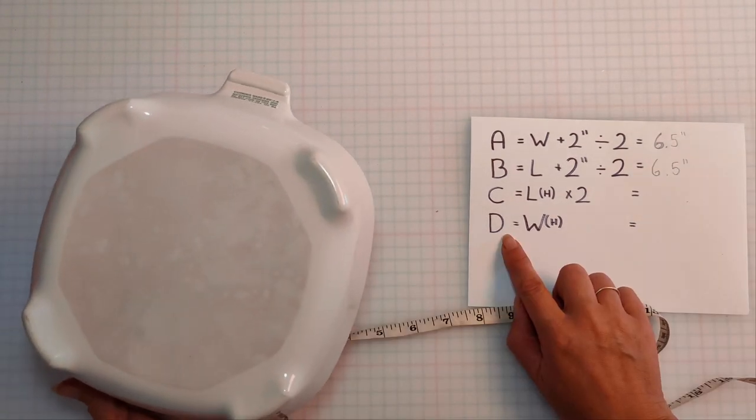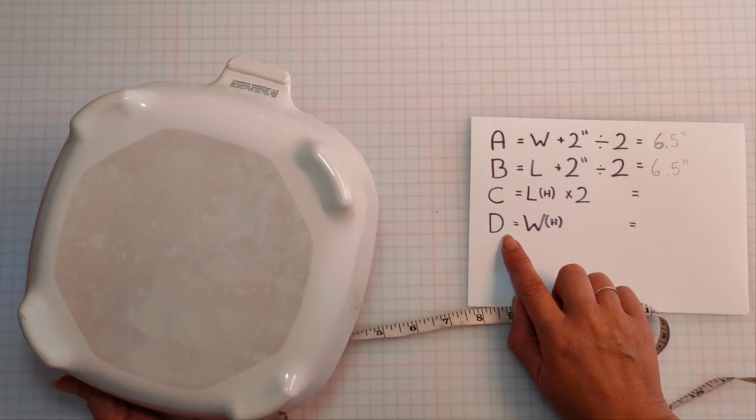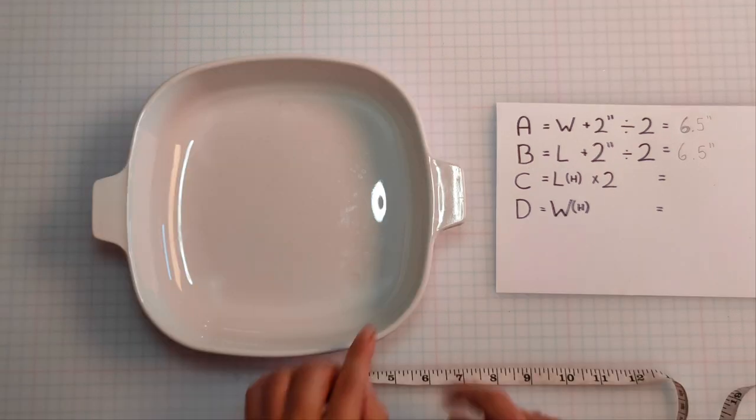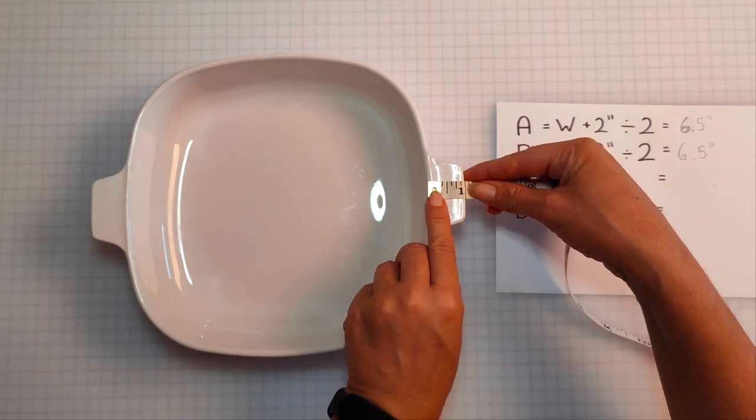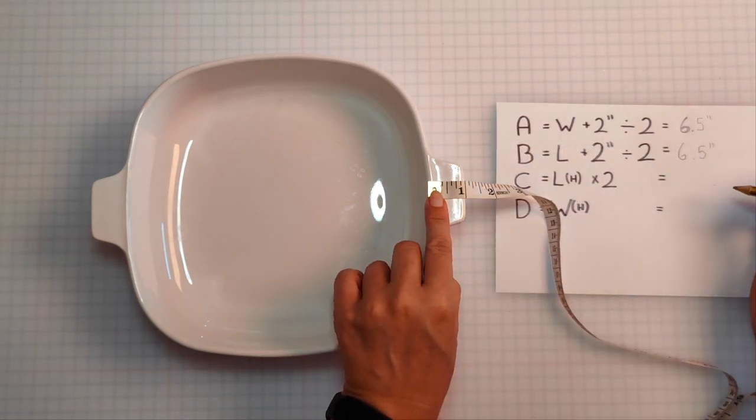Now we're going to measure the handle. If your casserole dish doesn't have a handle then you can omit these steps. C is the length of the handle times two. My handle is one inch which means my C measurement is going to be two inches.